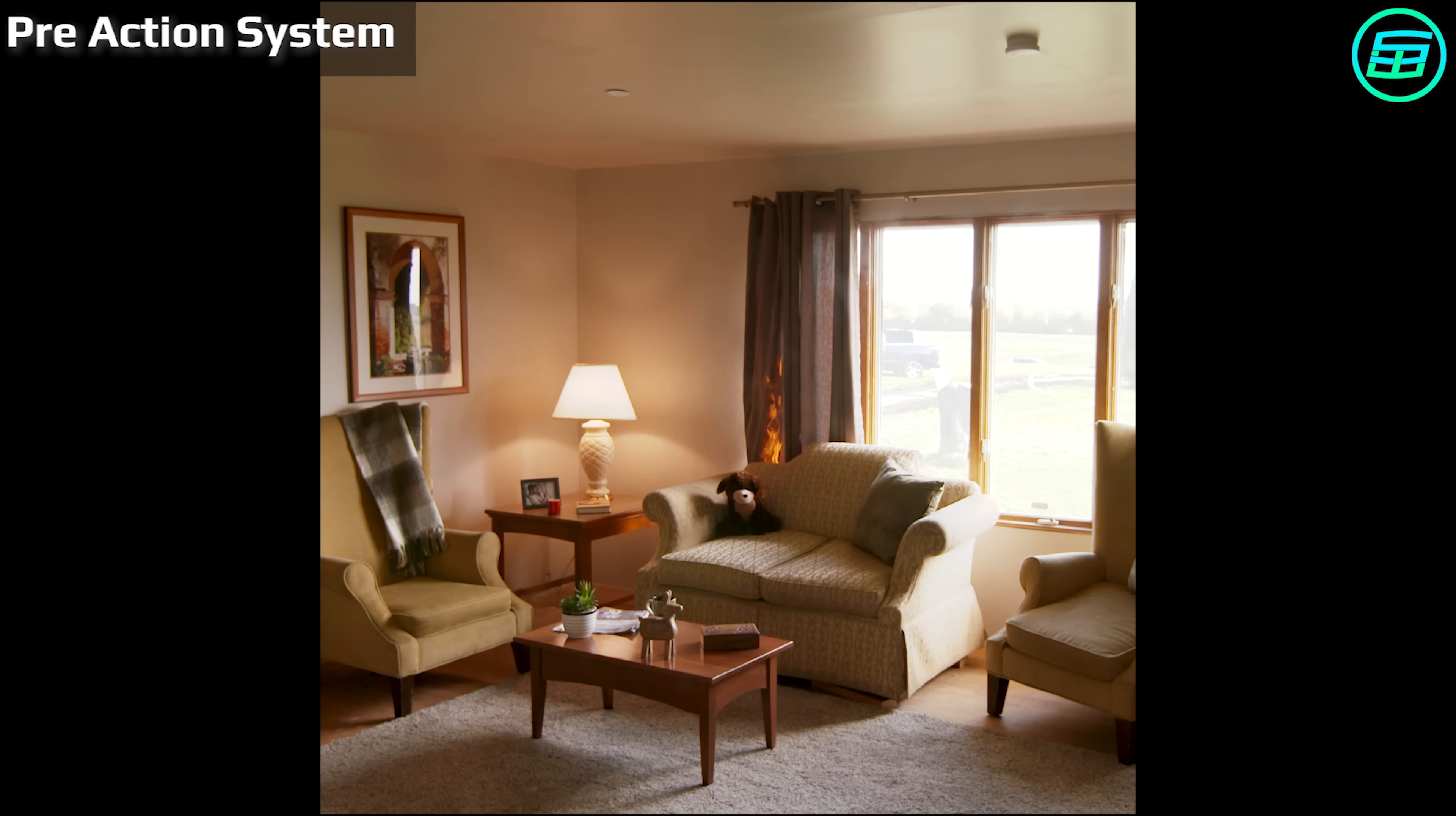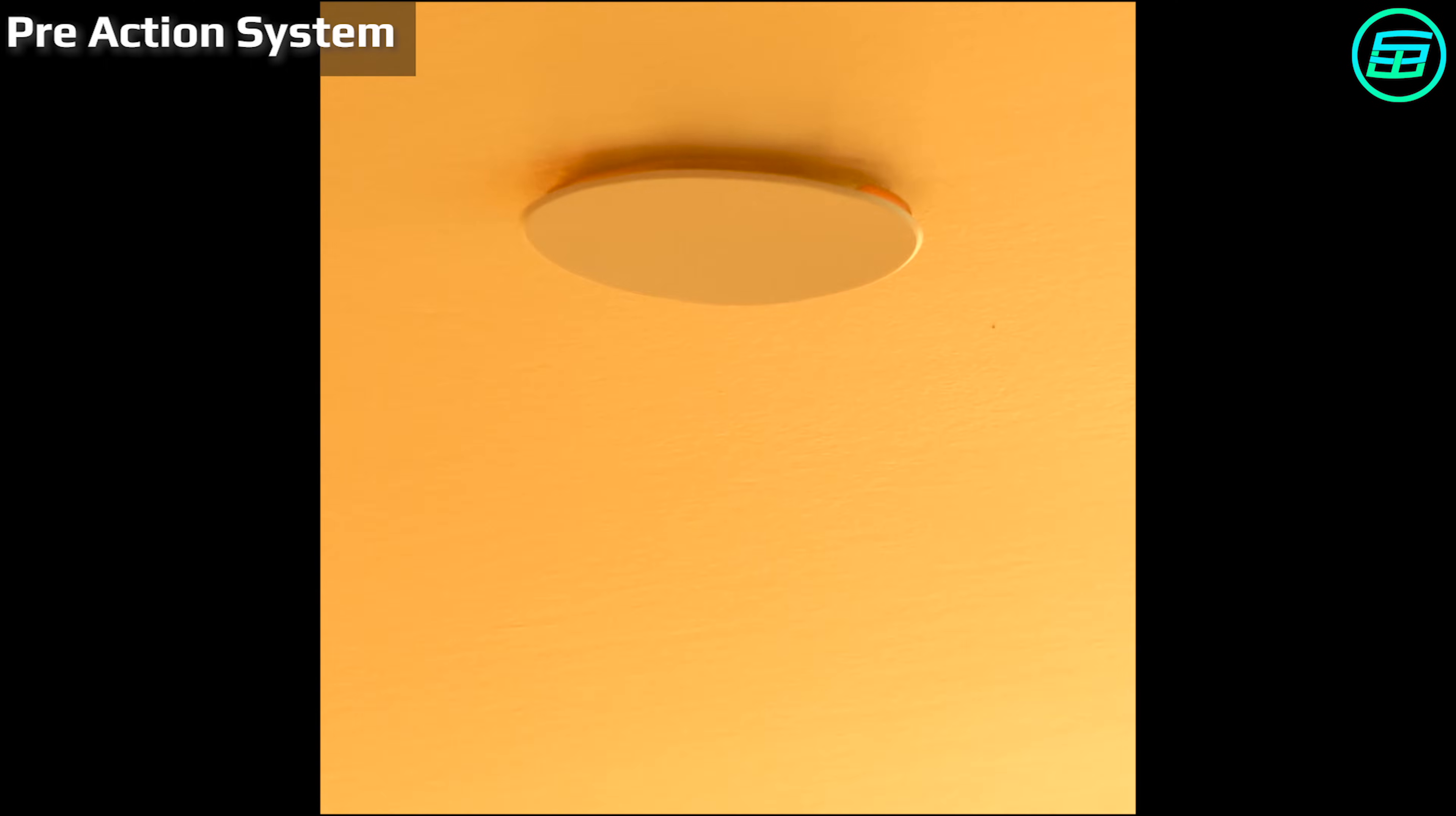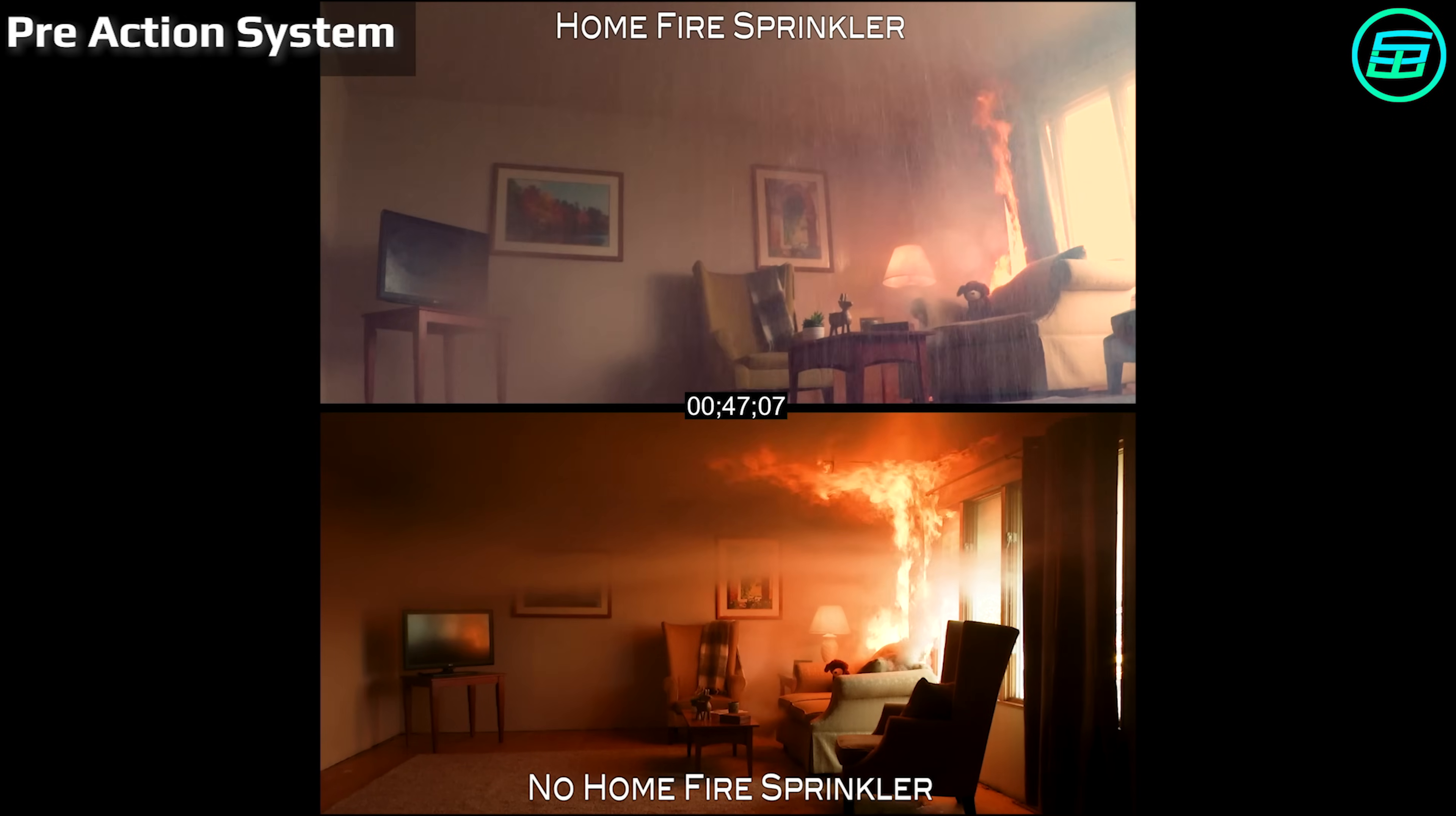Pre-action systems are a kind of dry pipe sprinkler system that require two activation steps. When heat or smoke is detected, the pre-action valve opens and allows water into the pipes. Then, the sprinkler heads can be individually activated to release water over the fire. This two-step process enables facilities to shut off the system in case of a false alarm, protecting assets from water damage.